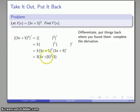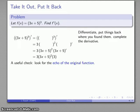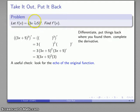This is a perfectly good form to leave the derivative in. If you want to, you can multiply the constant 3 by the constant 3, but there's no real need for more algebraic simplification. The chain rule is sufficiently complicated that it's worth looking at the final expression for an echo of the original function. If you're differentiating anything involving the quotient rule, product rule, or chain rule, you'll generally get an echo of the original function in the derivative. Here the echo is that (3x + 5) which appeared in the original also shows up in the derivative.